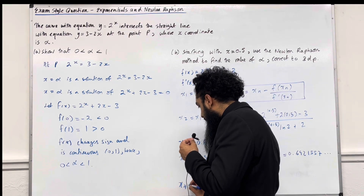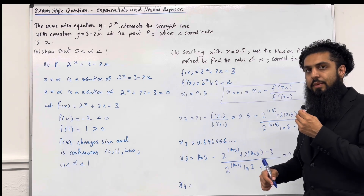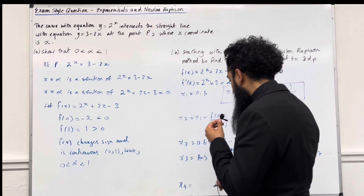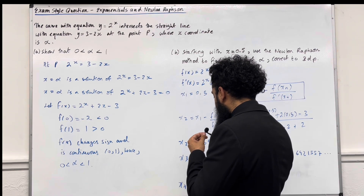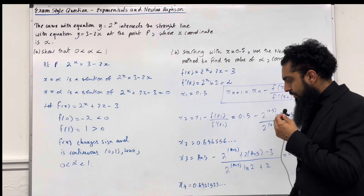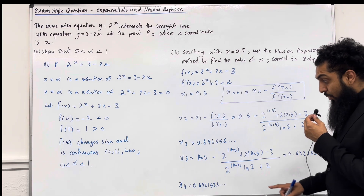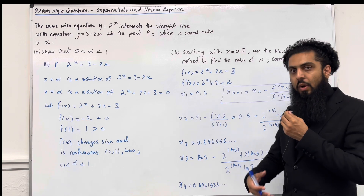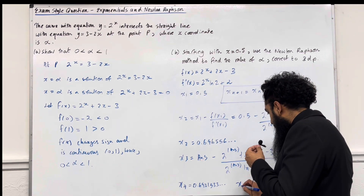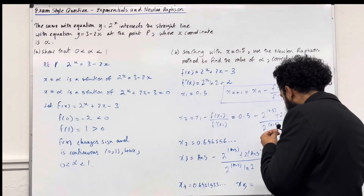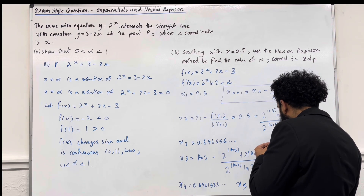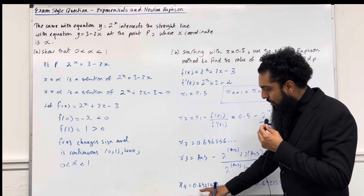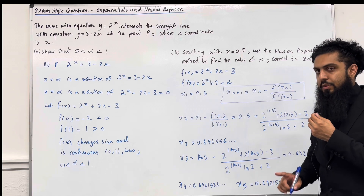I need to work out x4. Because I've used the answer button, I can now simply press equal repeatedly to work out all further approximations. x4 is equal to 0.6921533..., which rounds to 0.692 to three decimal places. That's consistent with x3. To be certain, I work out x5, which also gives 0.6921533..., rounding to 0.692 to three decimal places. There is consistency across x3, x4, and x5.